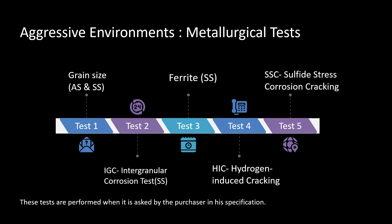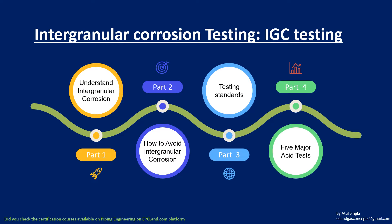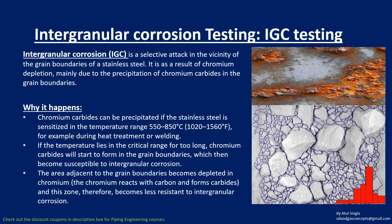Intergranular corrosion testing is relevant in process industry aggressive environments. In this section, we will try to understand what intergranular corrosion is, how we can avoid it, what industry and testing standards are used to identify it, and we'll look at five acid tests that are popular for performing this testing.